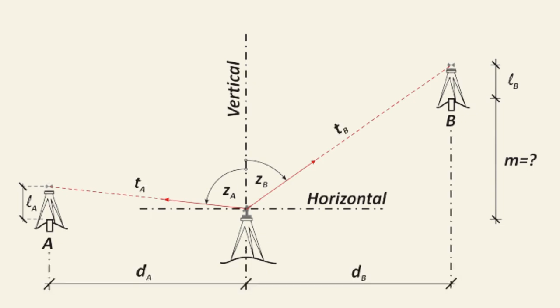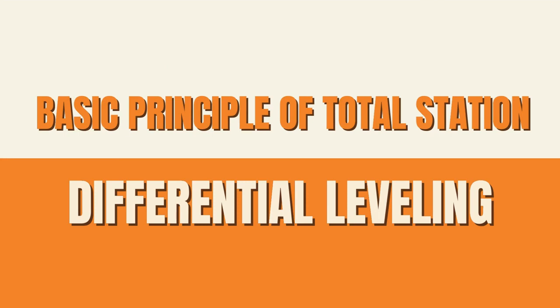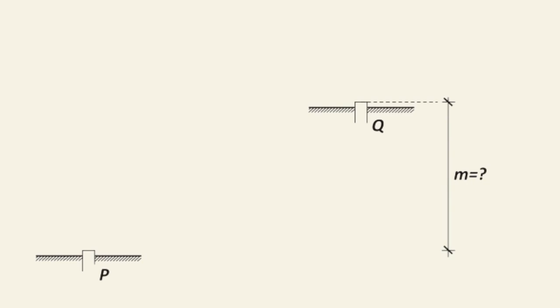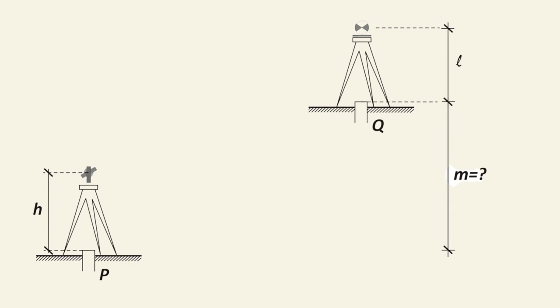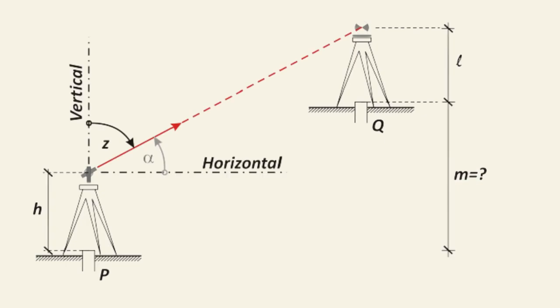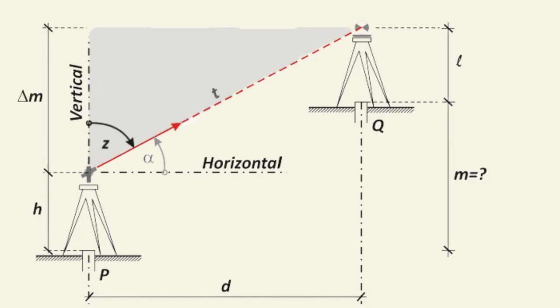The height of the instrument and the height of the target are the only further observations required. To determine the elevation difference between points P and Q, a total station is set up at point P and the rod standing at point Q. The height of the instrument has been measured using a small tape. By trigonometry, the horizontal distance D or the slope distance D between the points are needed, and the vertical angle from one station to the other has to be measured.